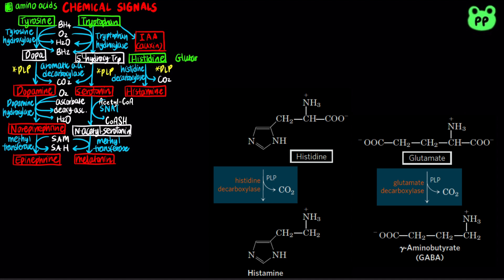Glutamate is the major excitatory neurotransmitter in our brain, and it can also undergo decarboxylation by PLP-dependent glutamate decarboxylase to form gamma-aminobutyrate, abbreviated as GABA, which is the major inhibitory neurotransmitter in our brain.